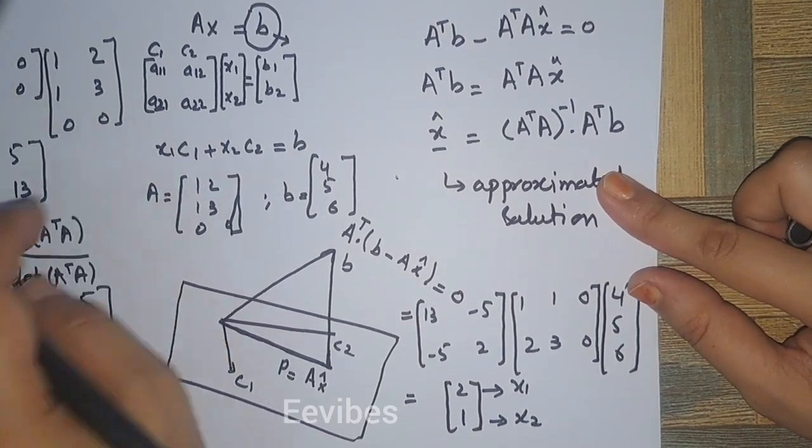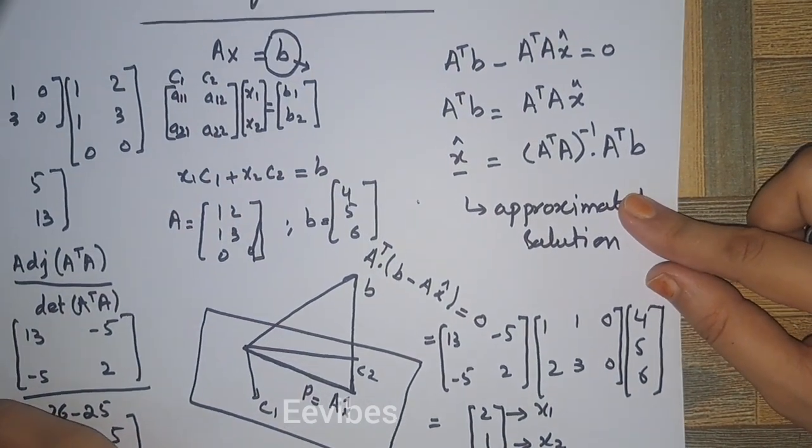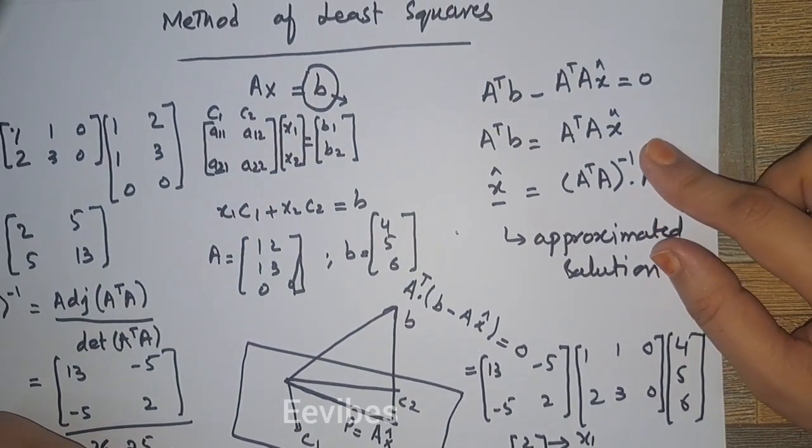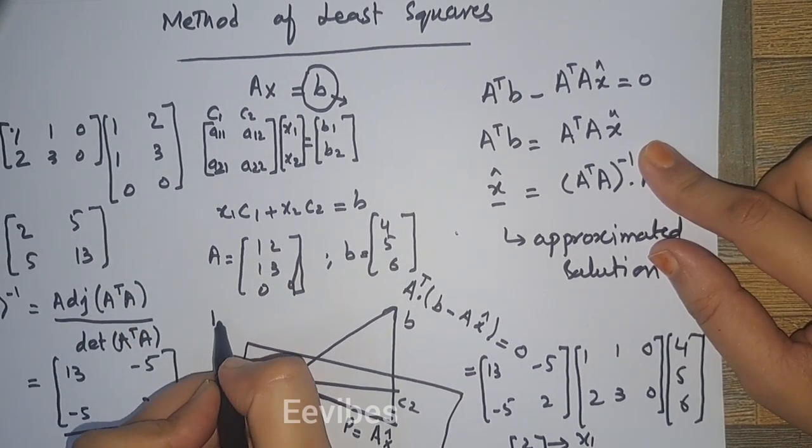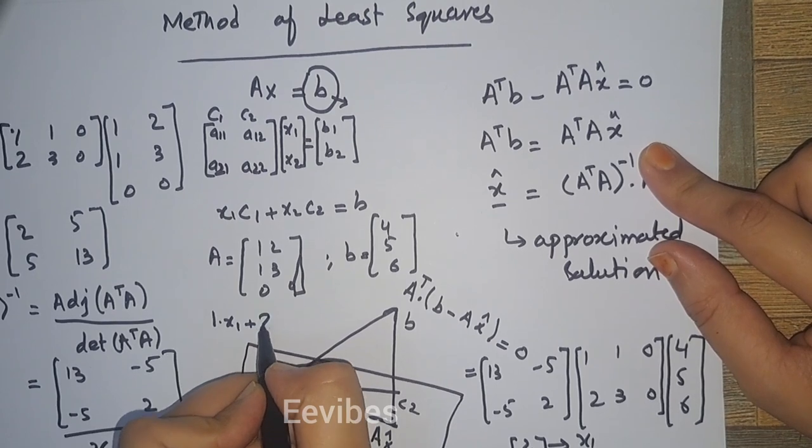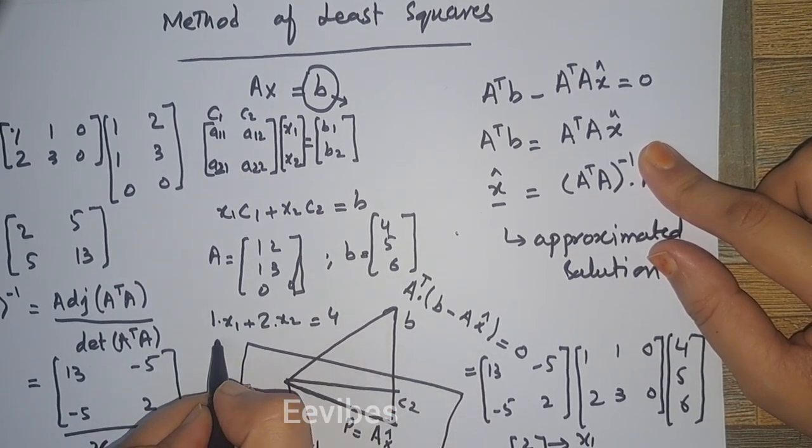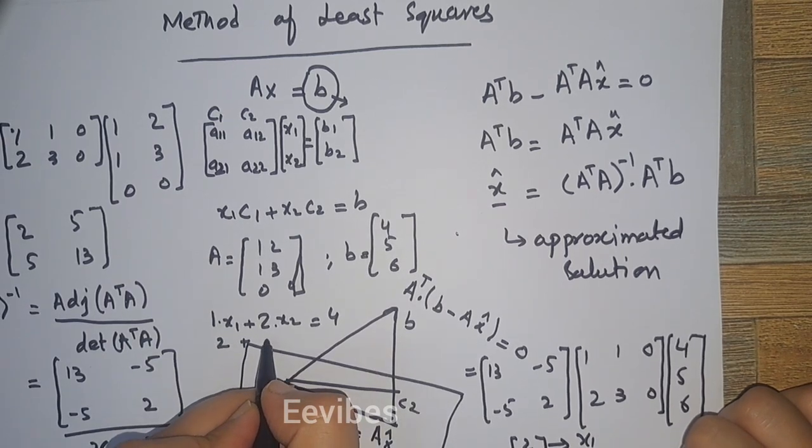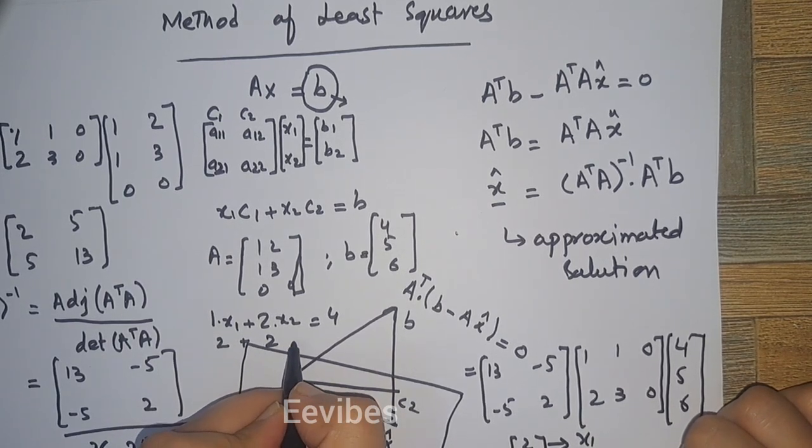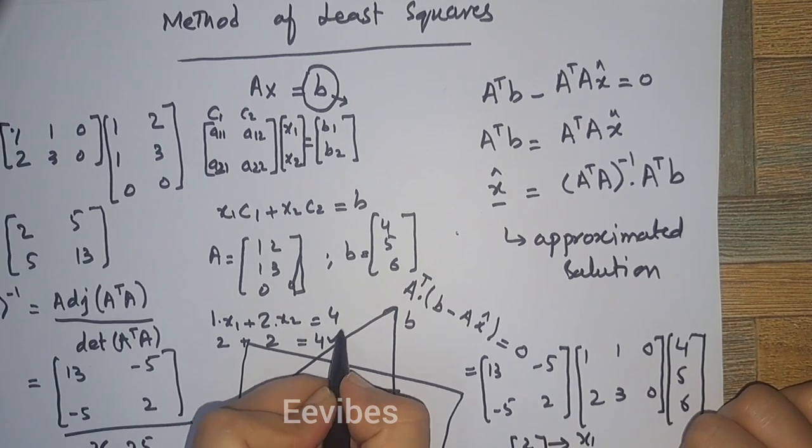Let's just check whether our solution is correct or not. So what happens? Basically, 1 times x1 plus 2 times x2 should result in 4. So 1 times x1 will be equal to 2 plus 2 times x2, which is equal to 2, is equal to 4. So this is true.